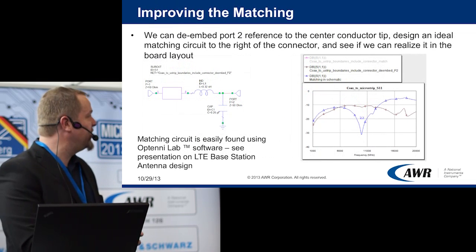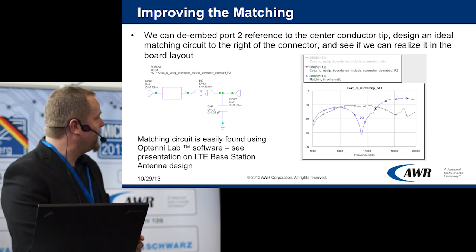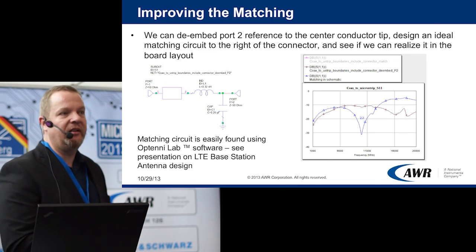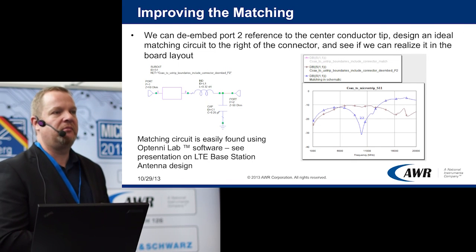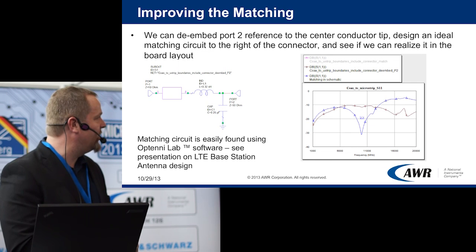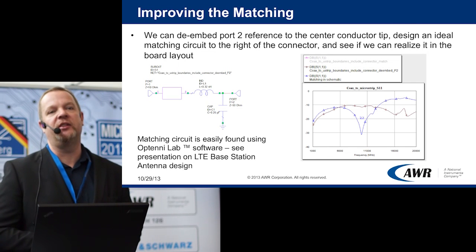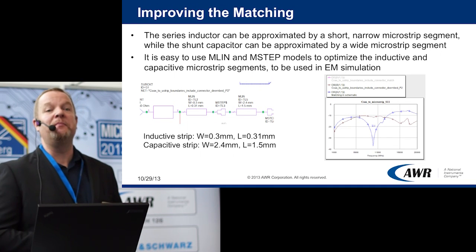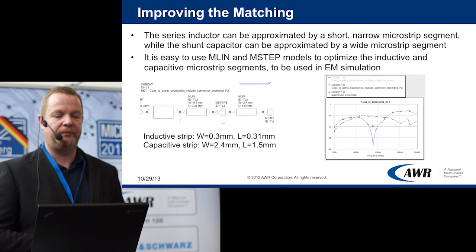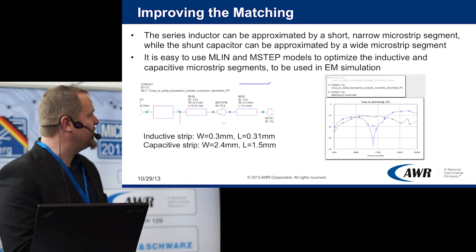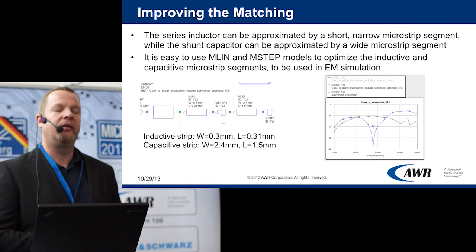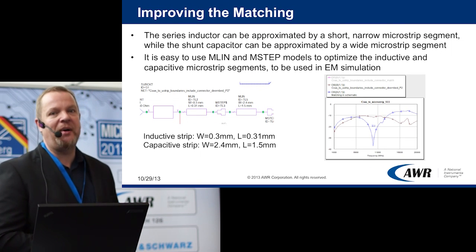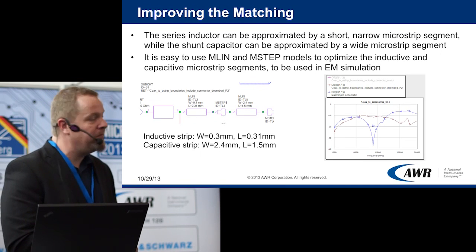Looking at the matching and transmission at 10 GHz, it's actually not that great. For lower frequencies, up to perhaps 2–3 GHz, it's okay and there is nothing to improve. But when we go higher in frequency, we recognize that a minus 10 dB reflection is too much. The idea is that perhaps we can design a simple matching circuit to correct the situation — it turns out that placing a series inductance followed by a small parallel capacitance after the connector gives really nice matching at 10 GHz.